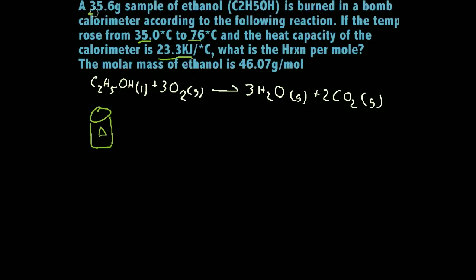In this problem, they're saying 35.6 grams of ethanol is burned in a bomb calorimeter according to the following reaction. If the temperature rose from 35 degrees Celsius to 76 degrees Celsius and the heat capacity of the calorimeter is 23.3 kilojoules per degree Celsius, what is the heat reaction per mole?